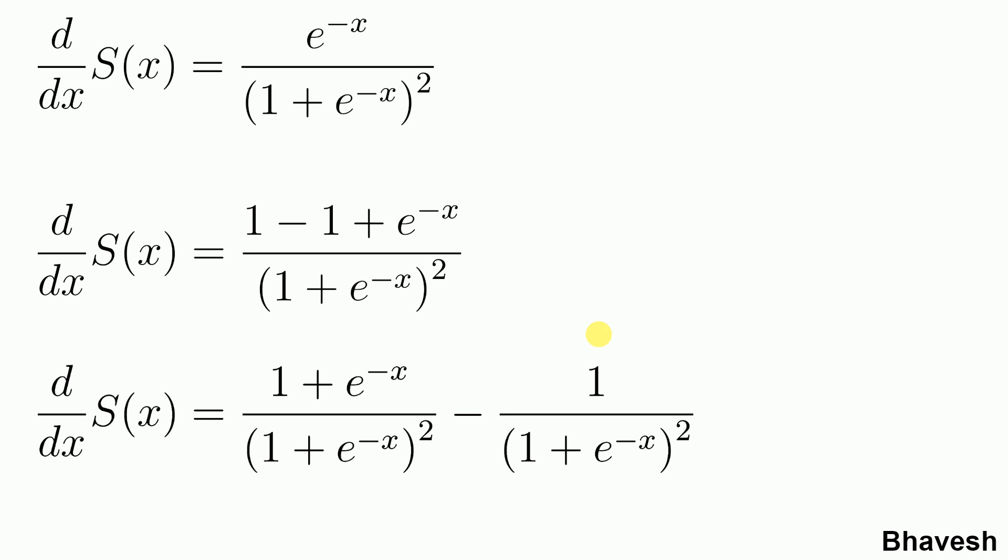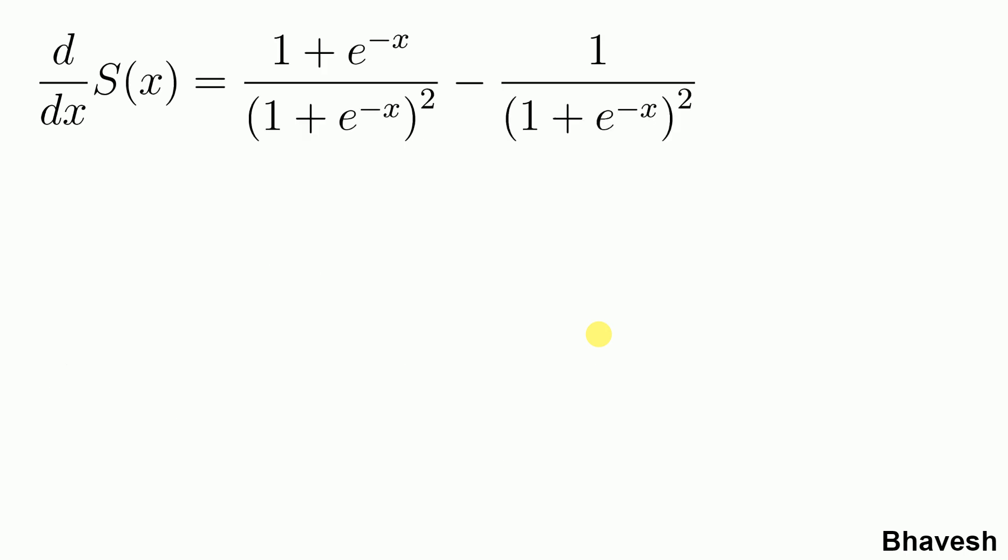So now that we've done this let's go to the next step. I start off with the point that I left in my previous slide. As you can clearly see these two terms are literally the same but the denominator is squared version of the numerator. So what I do is I reduce the power of the denominator by 1 so this is cancelled and I am just left with 1 upon 1 plus e to the power minus x minus 1 upon 1 plus e to the power minus x the whole square which is this term.